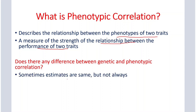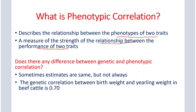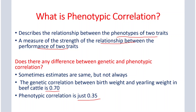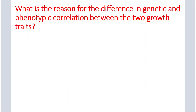Is there any difference between genetic and phenotypic correlation? Sometimes the estimates of genetic correlation and phenotypic correlation are the same, but not always. For example, the genetic correlation between birth weight and yearling weight in beef cattle is about 0.7, and the phenotypic correlation between birth weight and yearling weight is just 0.35, which is half of the genetic correlation. So you can see there is a big difference between the genetic correlation and phenotypic correlation.